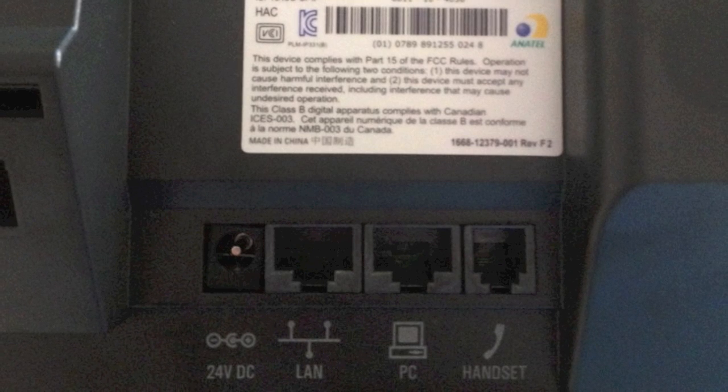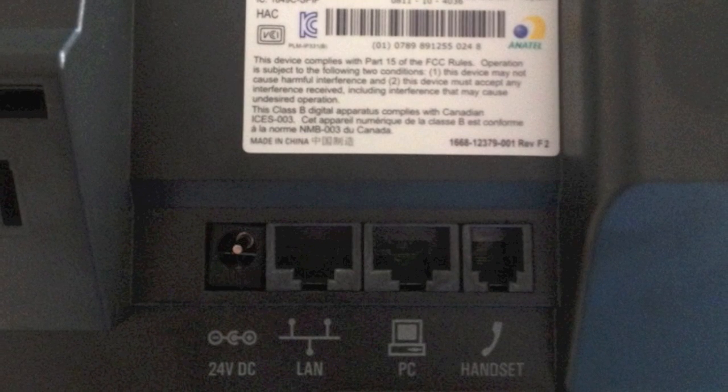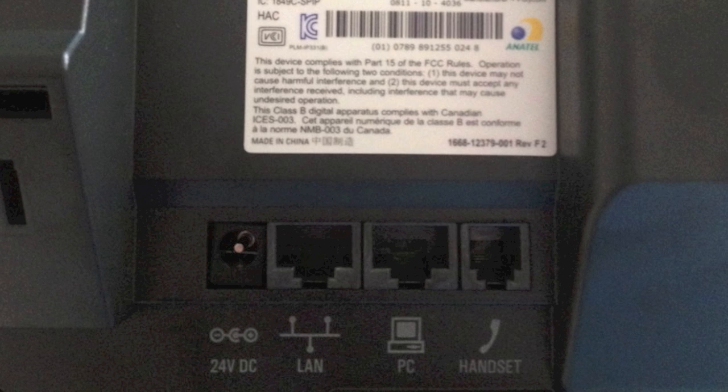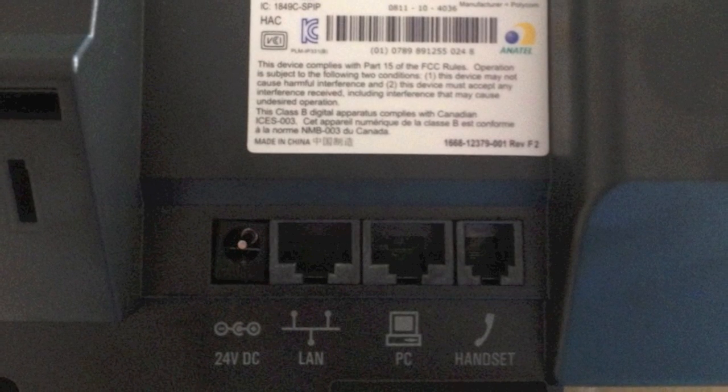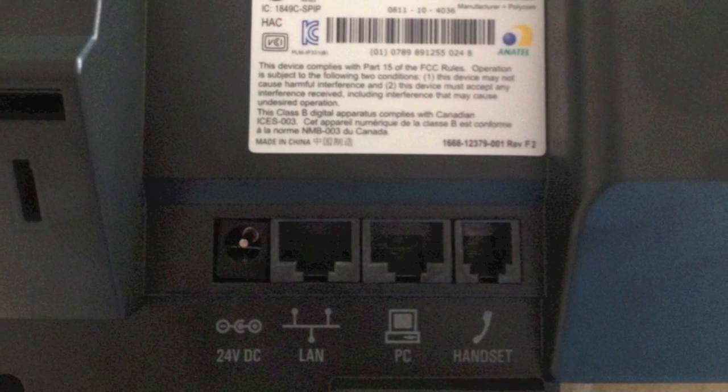The back of the phone contains the power input, the LAN jack which connects to your wall socket or to your network equipment, the PC jack which connects to your computer, and the handset jack which connects to the handset of the telephone.